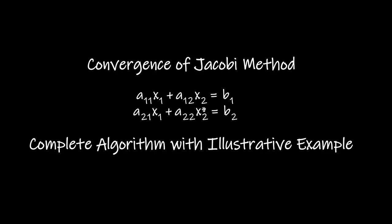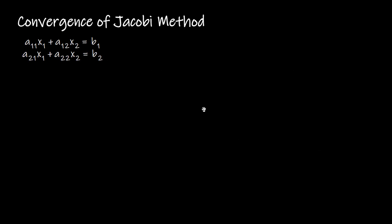In this video I'm going to talk about the Jacobi method, an iterative scheme used to find the approximate solution of a system of linear equations. For convenience, let's consider a system of two linear equations in two variables: a11·X1 + a12·X2 = b1, and a21·X1 + a22·X2 = b2, where a11, a12, a21, a22 are the coefficients, b1 and b2 are constants, and X1 and X2 are the variables we want to find.